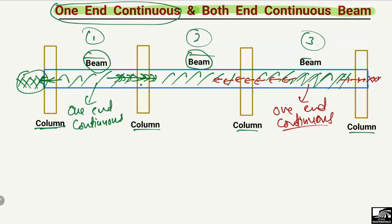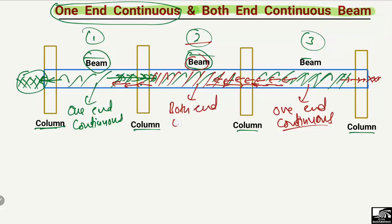Now if we look at the middle beam — the second beam — this beam has been continuous on this end as well as continuous on this side. So this beam has been continuous on both ends at the columns. This type of beam is known as the both-end continuous beam.